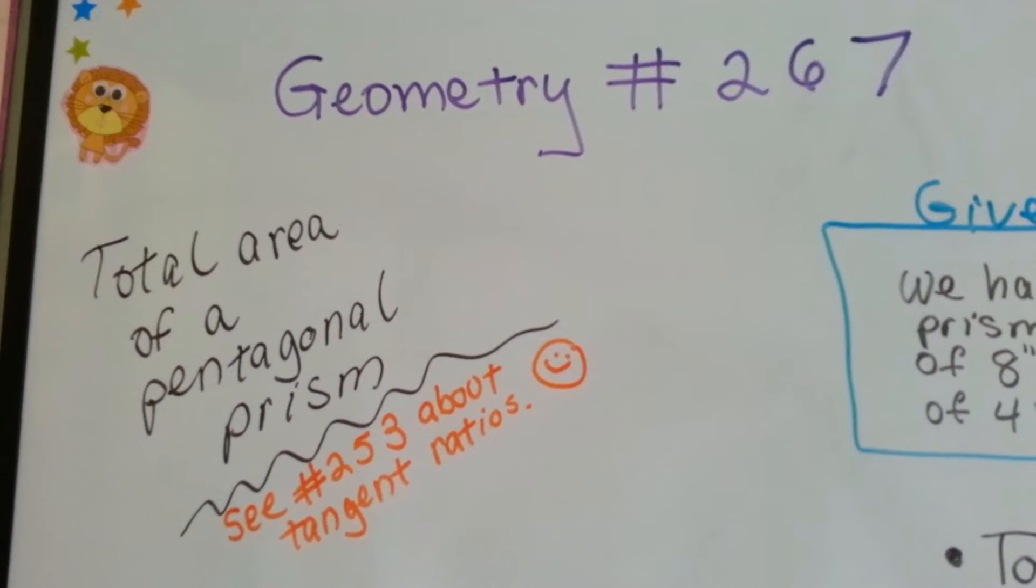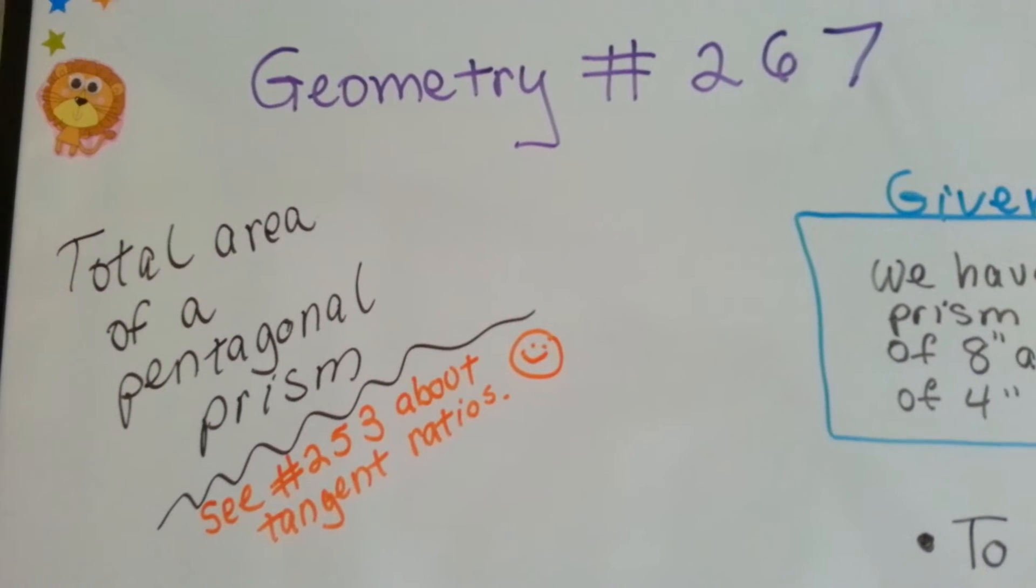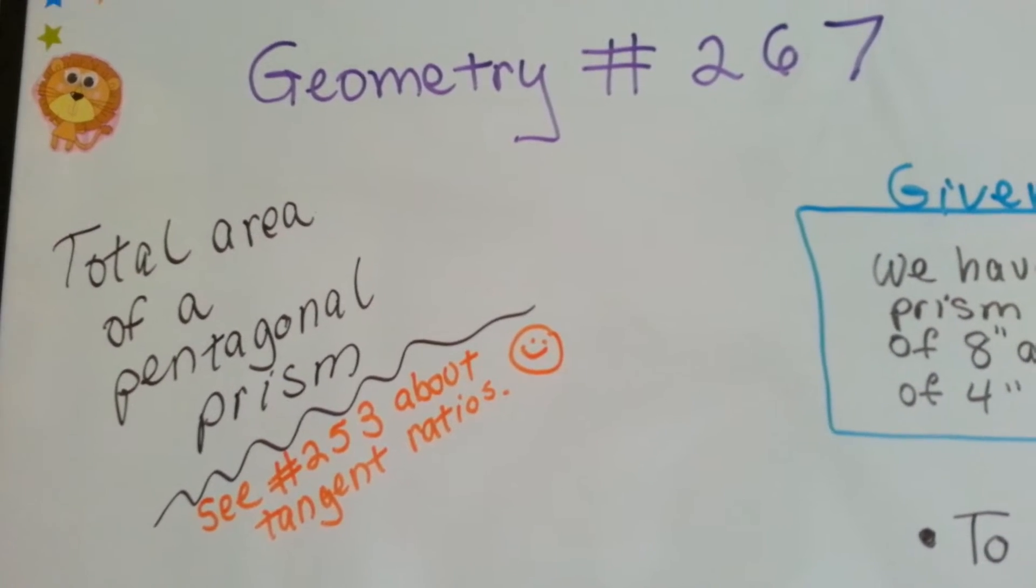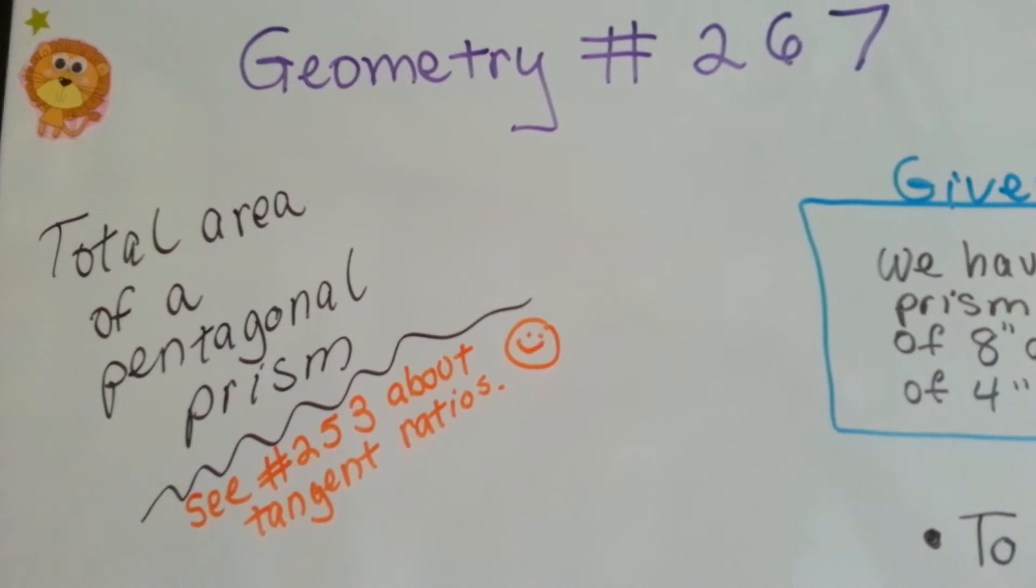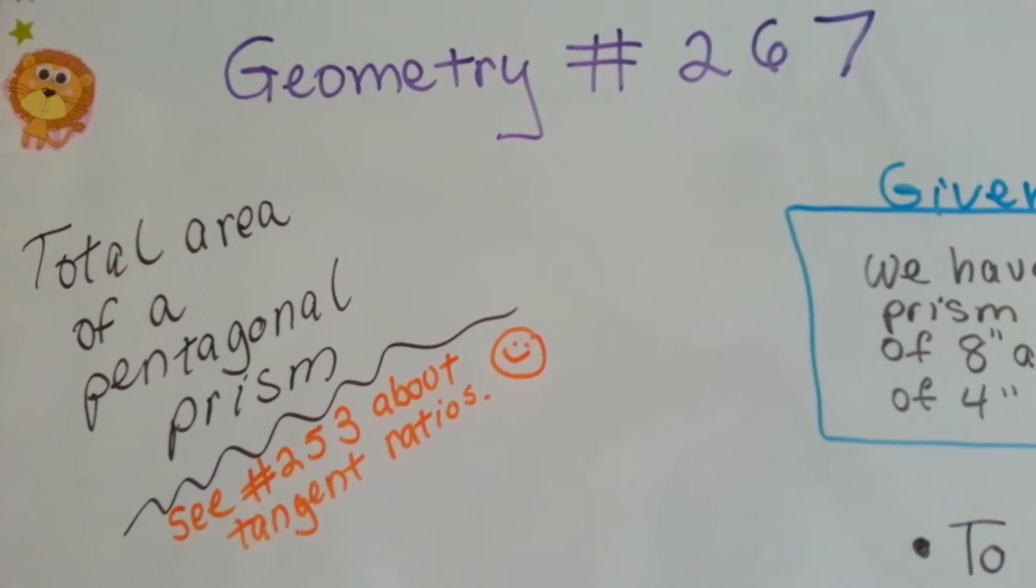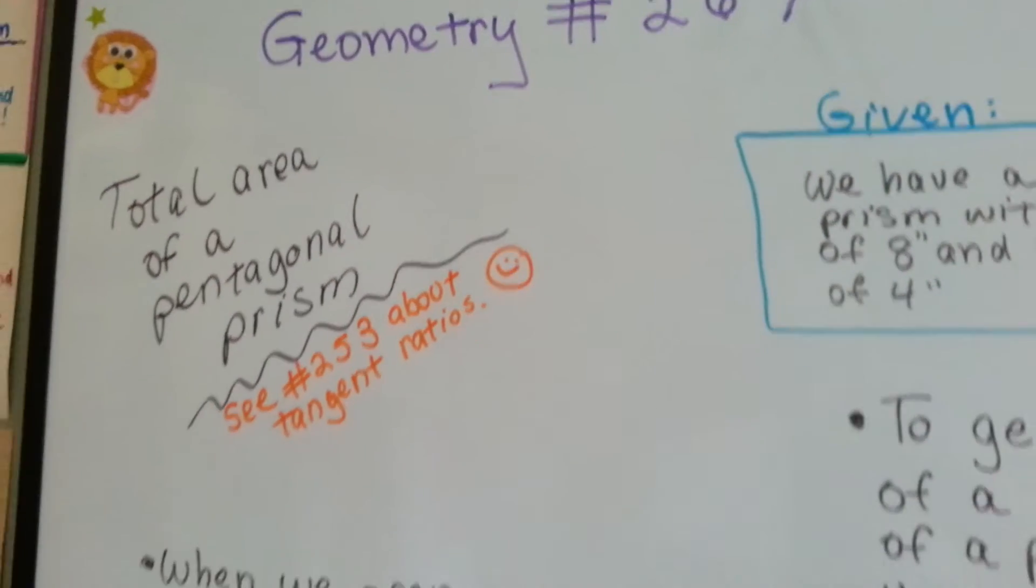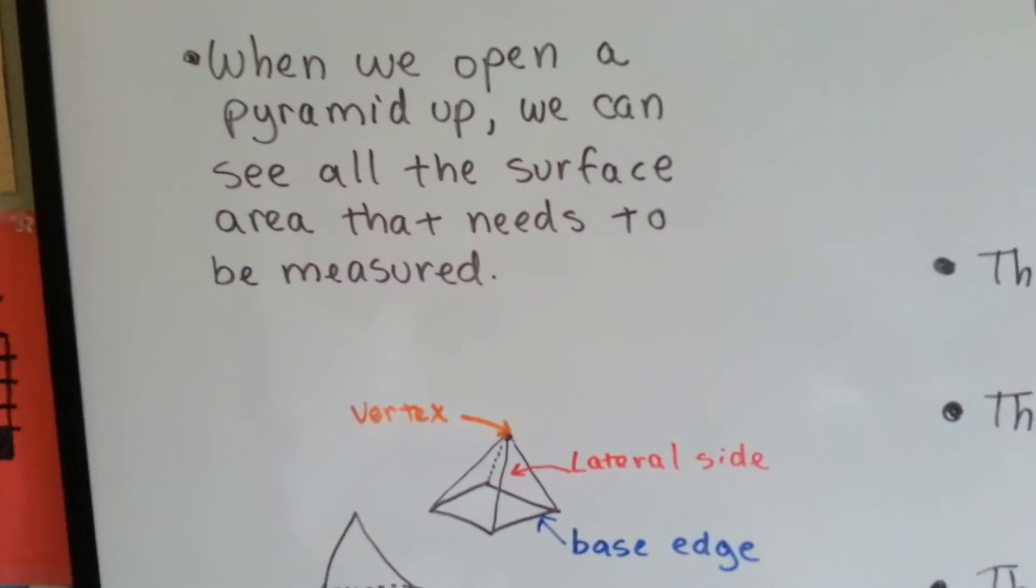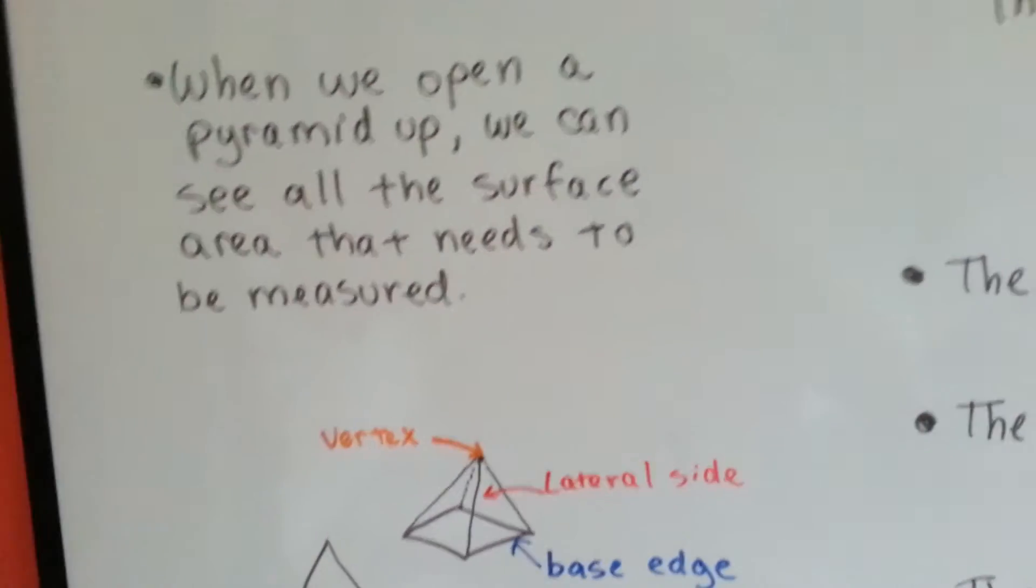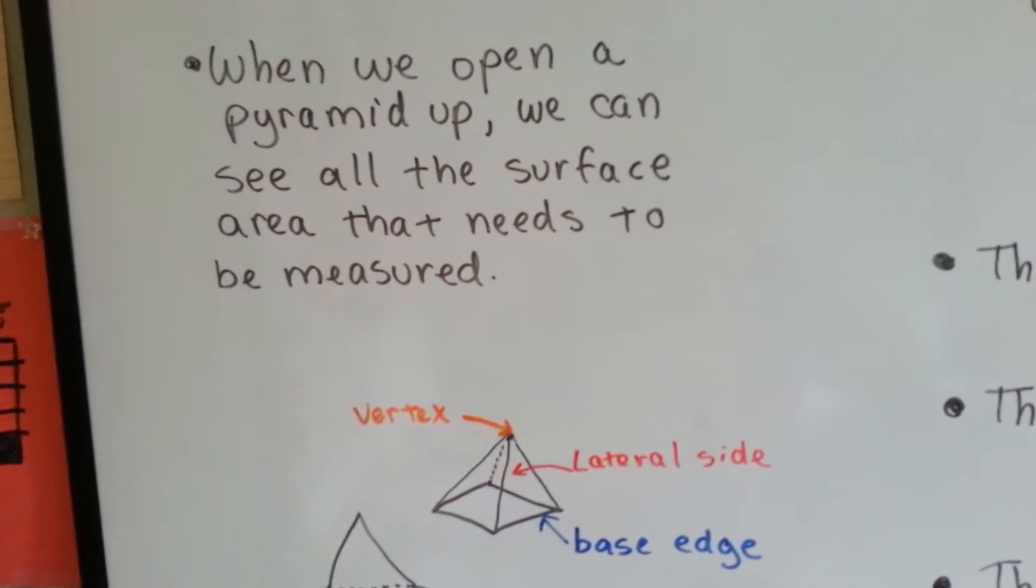Geometry number 267, the total surface area of a pentagonal prism. If you don't know what tangent ratios are, I really need you to watch my video number 253 about tangent ratios so that you'll understand this video. The last couple videos we've been doing surface areas of prisms, triangle ones, square ones. Now we're going to do one that is a pentagon base, so it's a pentagonal prism.